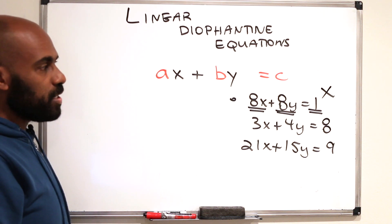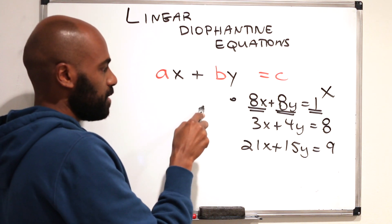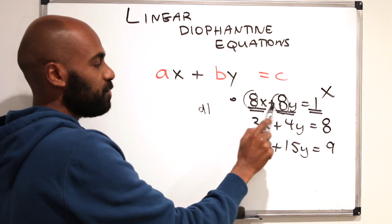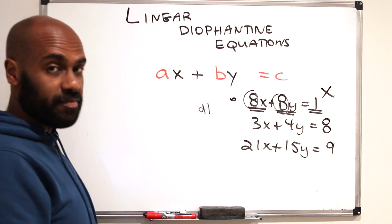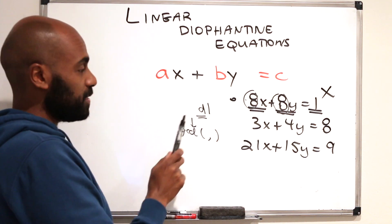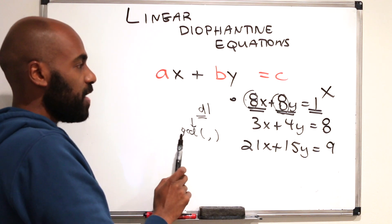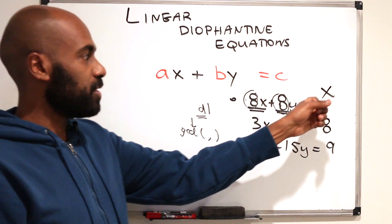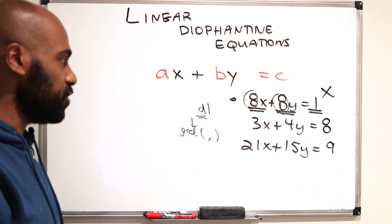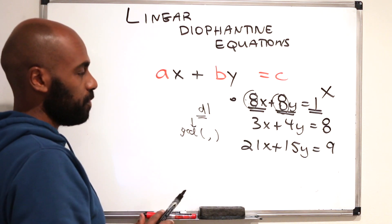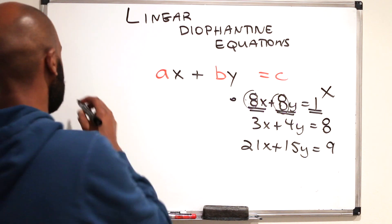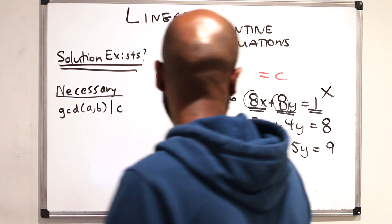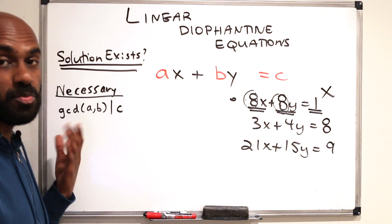A principle we're learning here is that if D divides A and D divides B, then D must divide any integer combination, meaning it has to divide the right-hand side. In particular, if we pick D to be the GCD of A and B, then it divides both quantities and consequently must divide C. So as a necessary condition, for a solution to exist, the GCD of A and B must divide C.